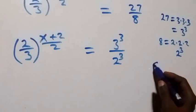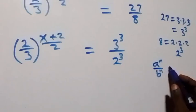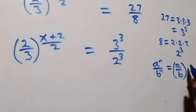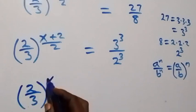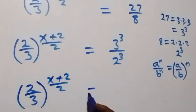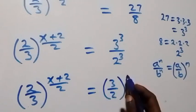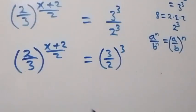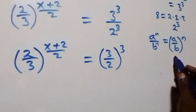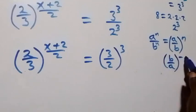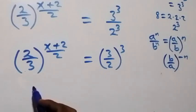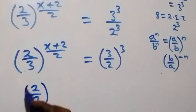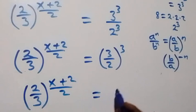From the law of indices, a raised to power n over b raised to power n can be written as (a over b) raised to power n. Applying this, we have 2 over 3 raised to power (x plus 2) over 2, equals to (3 over 2) raised to power 3. Since a negative exponent serves as the reciprocal, this becomes 2 over 3 raised to power minus 3.